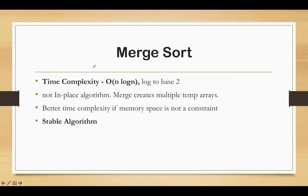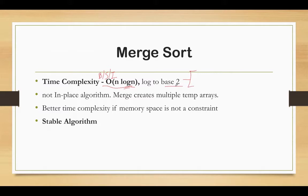Merge sort's time complexity is O(n log n), which makes it better than other sorting algorithms like bubble sort, selection sort, and insertion sort. Here the log is to base 2 because in each iteration we divide the array into 2 parts — that is why 2 is the base of the log.